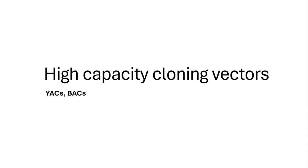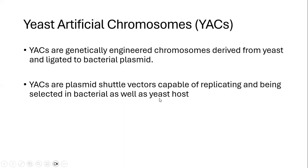Hello students. In today's class we are going to learn about high capacity cloning vectors, including yeast artificial chromosomes and bacterial artificial chromosomes. A yeast artificial chromosome is a genetically engineered chromosome derived from yeast and ligated to a bacterial plasmid. Yeast artificial chromosomes are basically shuttle vectors that are capable of replicating in bacteria as well as in a yeast cell.